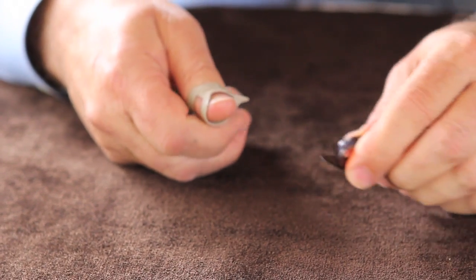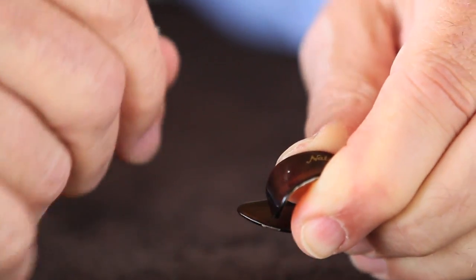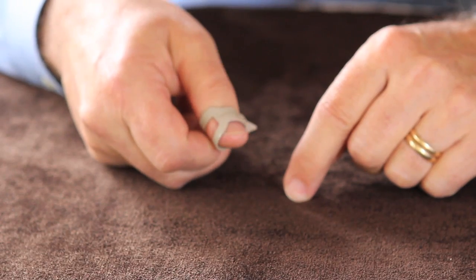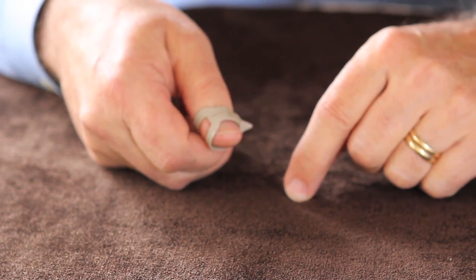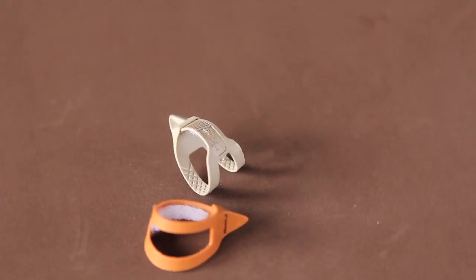This pick will not snag on the strings because it does not have an opening in it like a conventional thumb pick. You can also play this pick on the upstroke. That's something you've never been able to do before because it would come off if you played on the upstroke.